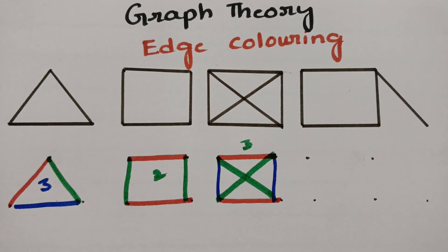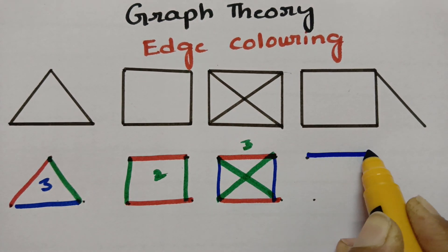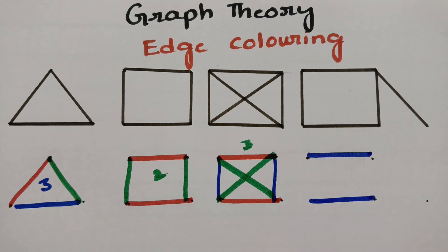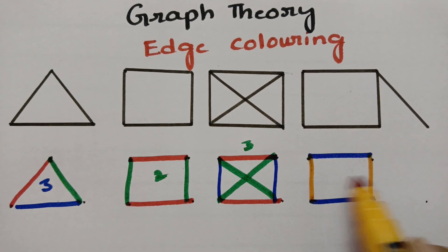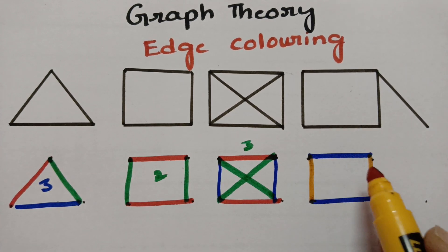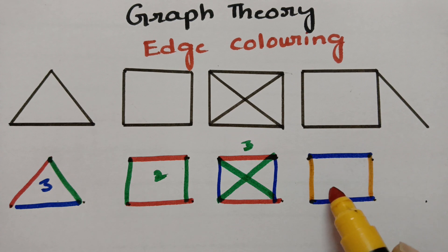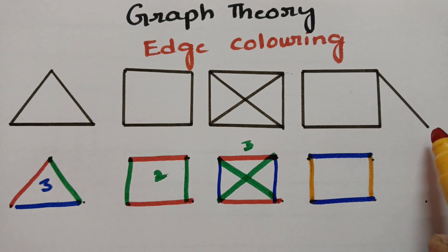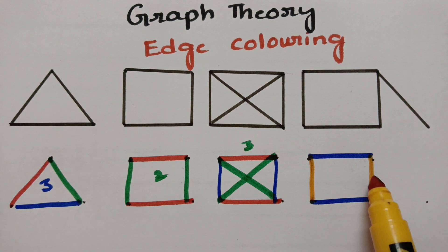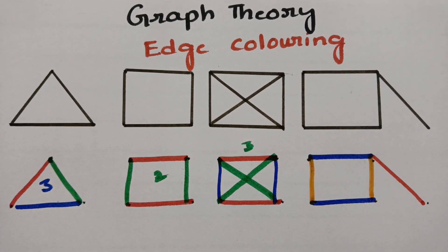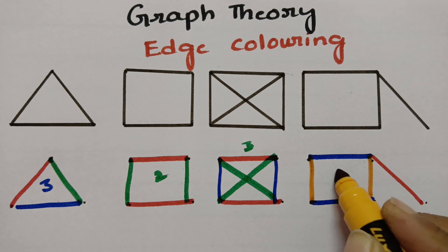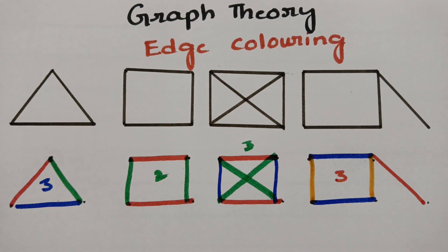For the next graph, I am using blue and again blue where edges are not adjacent. For another edge I shouldn't use yellow or blue, so I have to use a different color. Therefore the chromatic number for this graph is 3, as I have used three different colors.